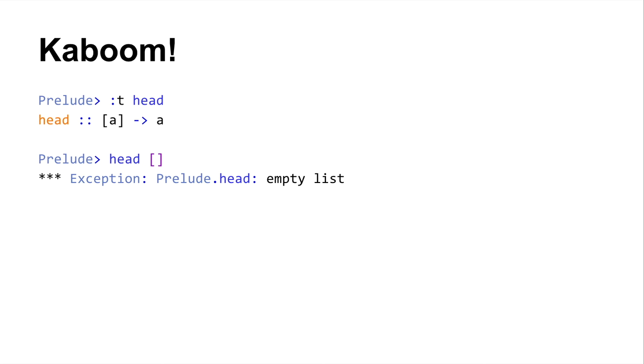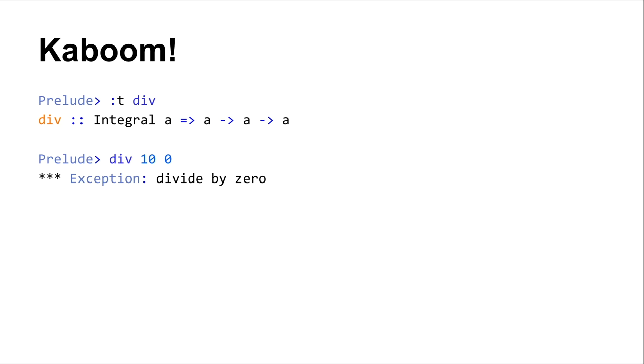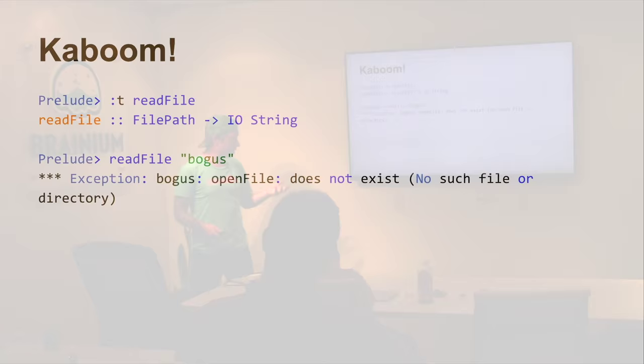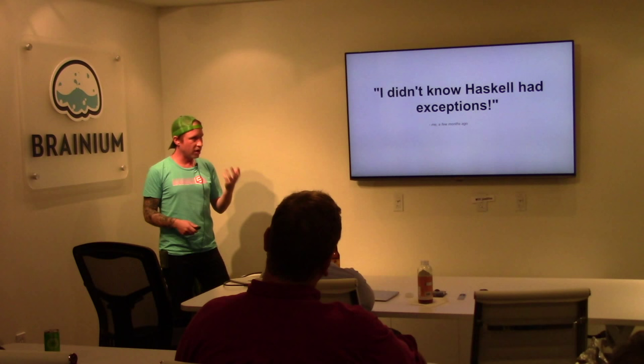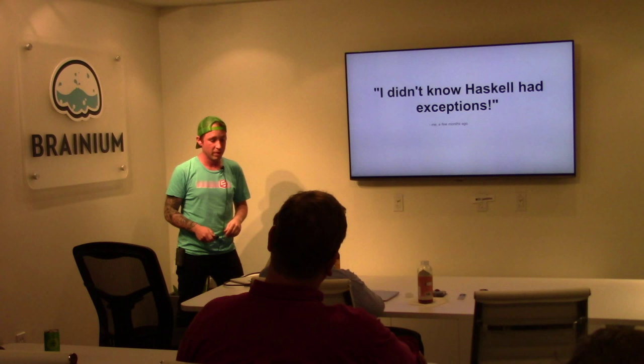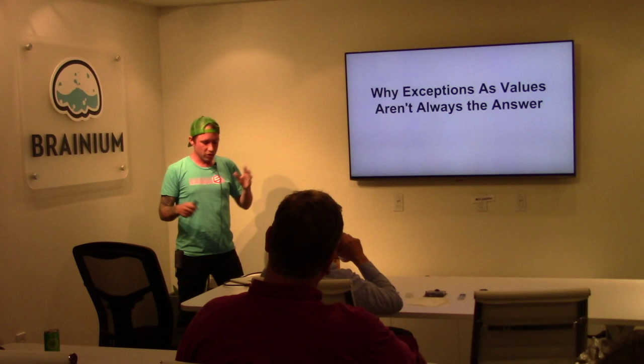Then you use head on an empty list and see some weird output in GHCi that says 'exception' — what? You divide 10 by 0 and see an exception. You try to read a file with a bogus path and see an exception. You think: I didn't even know Haskell had an exception system — I thought functional purity meant I'd never have to deal with these out-of-band ways to signal failure.